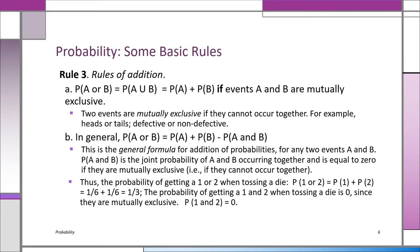What happens if the events are not mutually exclusive? Then this is the general formula: the probability of A or B equals the probability of A plus the probability of B minus the probability of A and B. If A and B are mutually exclusive, that last term — P(A and B) — is zero, which is actually the definition of mutually exclusive. For example, tossing a die: what's the probability of getting a one or a two? Those are mutually exclusive — you can't get both on a single toss. So P(1 or 2) = 1/6 + 1/6 = 1/3.